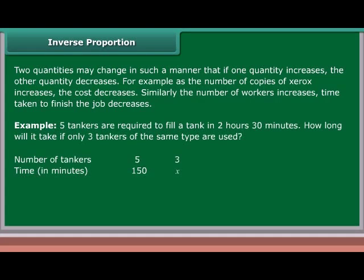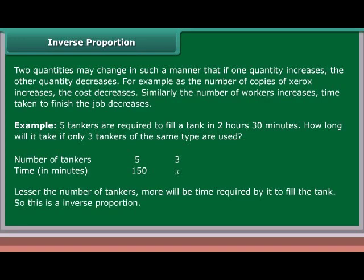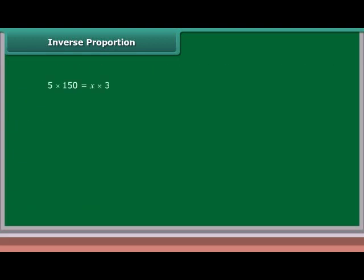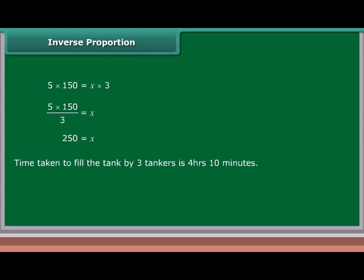Example: Five tankers are required to fill a tank in 2 hours 30 minutes (150 minutes). How long will it take if only three tankers of the same type are used? Lesser the number of tankers, more will be the time required — so this is an inverse proportion. 5 × 150 = X × 3, so X = (5 × 150)/3 = 250 minutes. Time taken to fill the tank by 3 tankers is 4 hours 10 minutes.